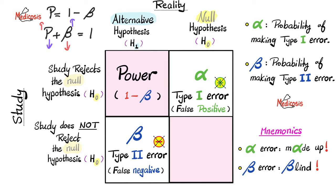Statistical power is when your study agrees with reality. Type 1 error is when you make up stuff. Type 2 error is when you're blind to the evidence. In type 1 error, you did reject the null hypothesis but shouldn't have — because the null hypothesis was true. In type 2 error, you did not reject the null hypothesis but should have — because the null hypothesis was not true.